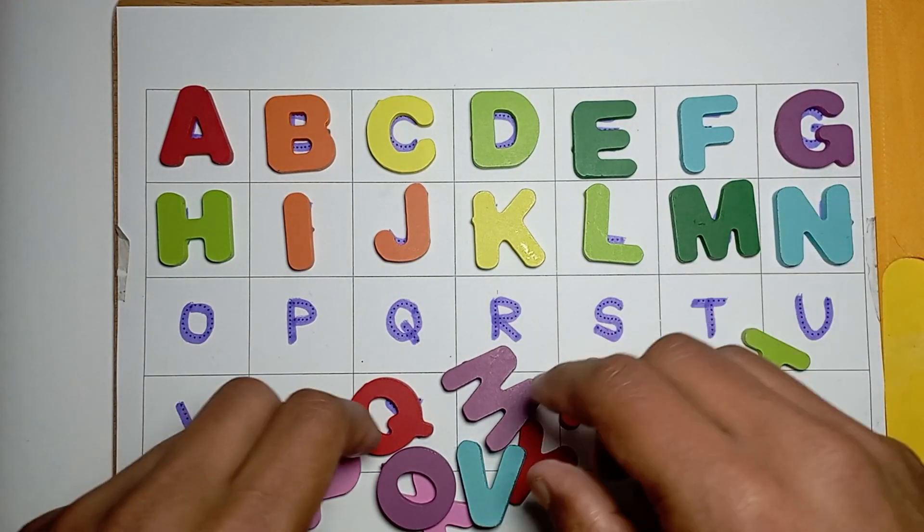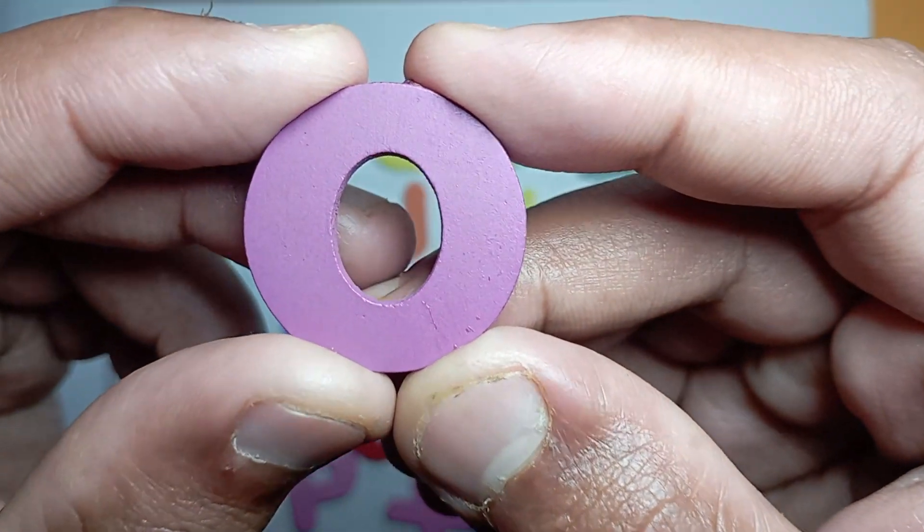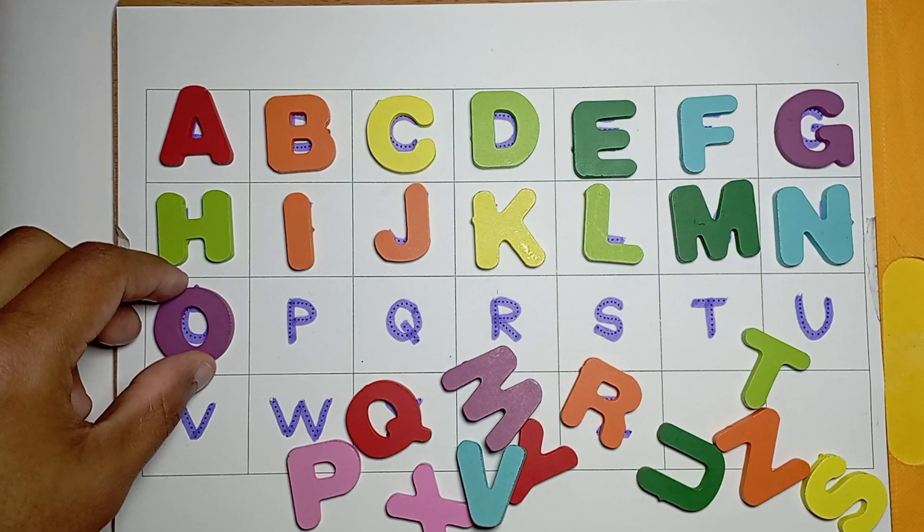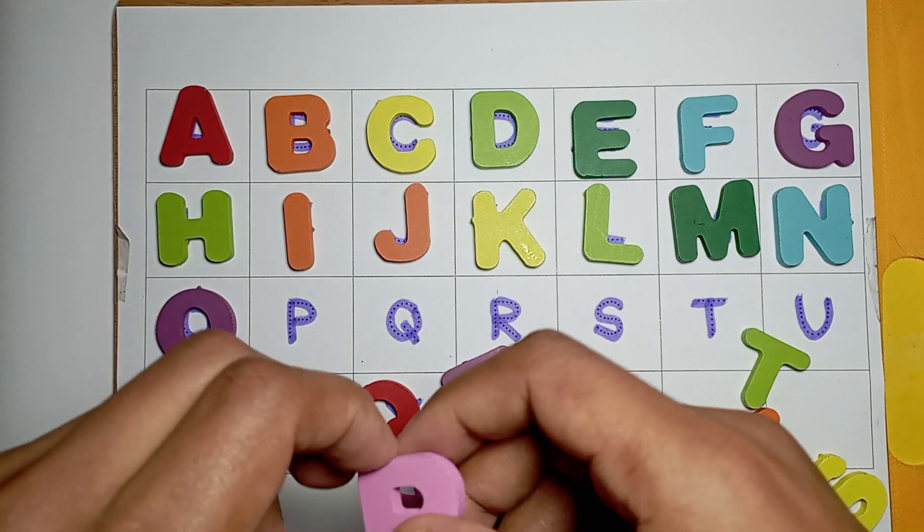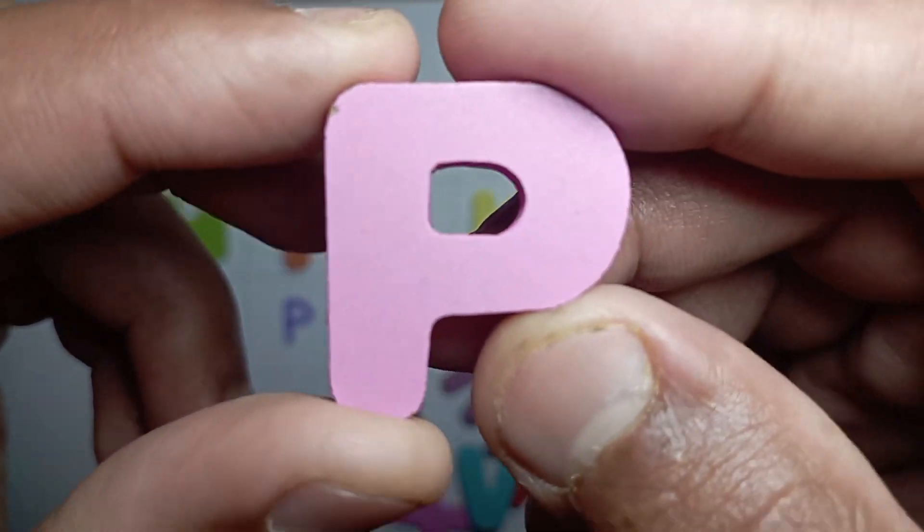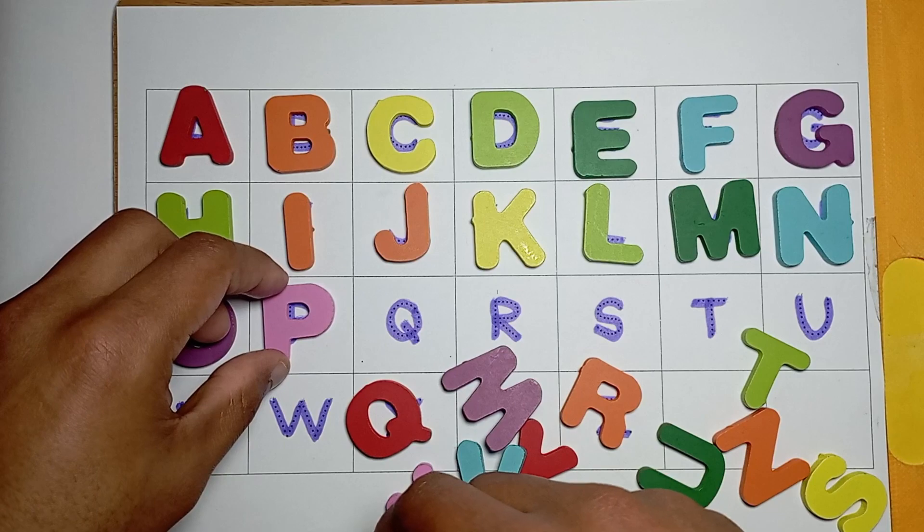N for nest, N for nest. O, O for onion, O for onion. P, P for penguin, P for penguin.